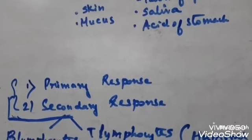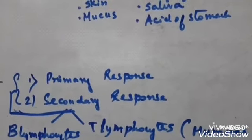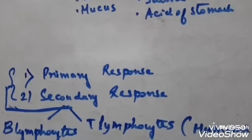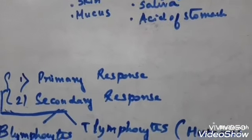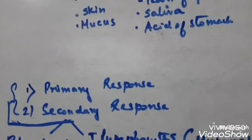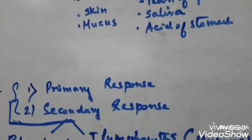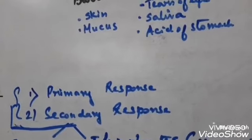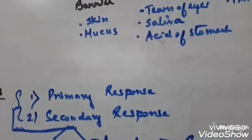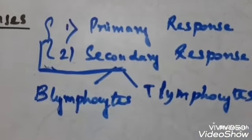The secondary response is the subsequent encounter with the same pathogen. It is a highly intense response, and the memory from the first encounter helps generate this strong secondary response. The immune system has the capacity to distinguish between self and non-self or foreign molecules. Both primary and secondary responses are carried out by two types of lymphocytes: B lymphocytes and T lymphocytes.